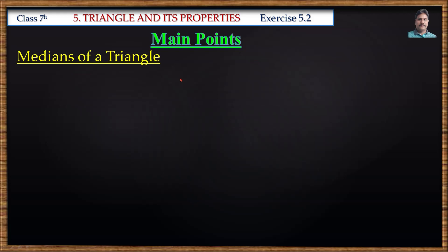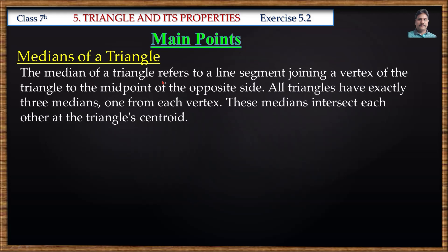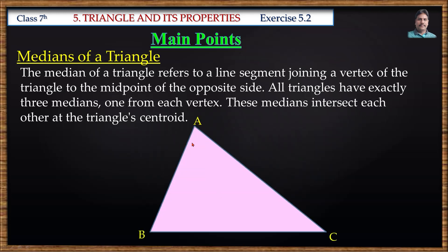The median of a triangle refers to a line segment joining a vertex of the triangle to the midpoint of the opposite side. All triangles have exactly three medians, one from each vertex, and these medians intersect each other at the triangle's centroid. For example, in triangle ABC, if D is the midpoint of side BC and we join this midpoint to the opposite vertex A, then this line is known as the median.